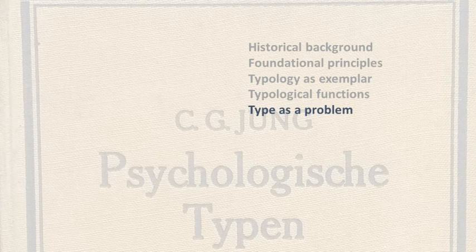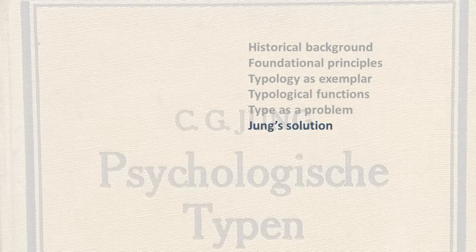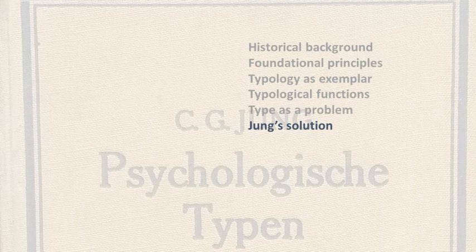Isabel Briggs Myers saw being a personality type as a virtue, but for Carl Gustav Jung, being a type was a problem. In his book Psychological Types, eight of the chapters have the phrase 'type problem' in the title. Jung describes a solution to the problem of opposites. He shows how to overcome conflict within ourselves and in our relationships, and how it can drive our psychological development. At the centre of his solution is a fifth psychological function, called the transcendent function.